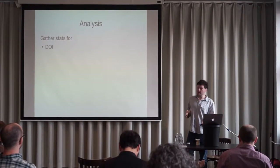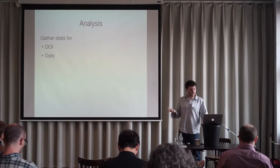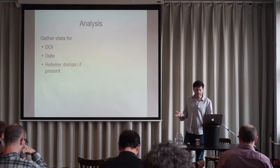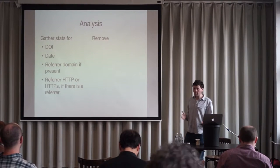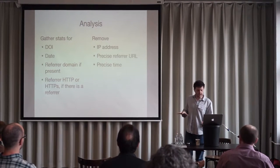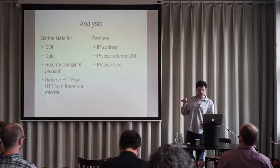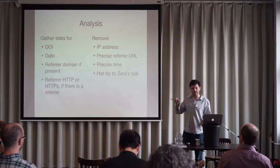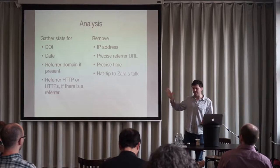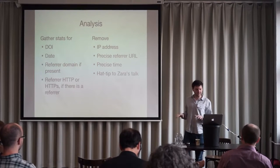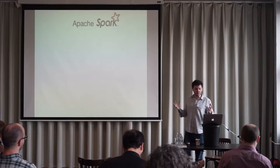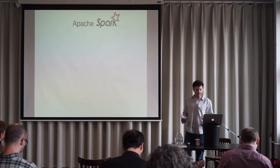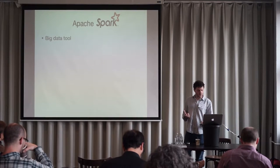We could gather stats on how DOIs are used, on what date, whether the referrer is present, whether it's HTTP or HTTPS. But crucially, I was going to remove the IP address, the precise referrer URL, and the precise time — because those are personal information. Zara gave a great talk yesterday about how important it is to think really carefully about this kind of data. After Spark popped up, I thought: I've got 1.5 terabytes of data — I'm going to use a big data tool.